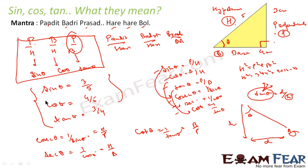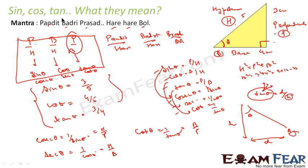The mantra is clear: Pandit, Badri, Prashad, Hari, Hari, Mool. Write sin, cos, tan — and also cosec, sec and cot. Cosec is the reverse of sin, sec is the reverse of cos, and cot is the reverse of tan. When you say sin theta, P by H; cos theta, B by H; tan theta, P by B. When you say cosec theta, H by P; sec theta, H by B; and cot theta, B by P. This may sound a little difficult to start with, but just remember Pandit, Badri, Prashad, Hari, Hari, Holi and then sin, cos, tan and cosec, sec, cot — then you can remember all of this.